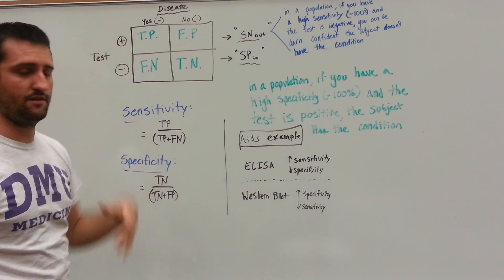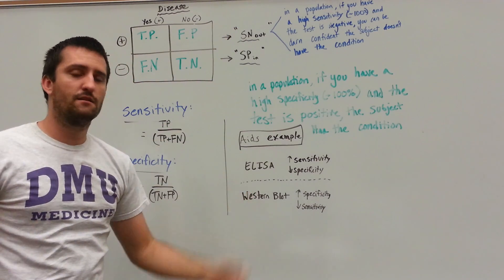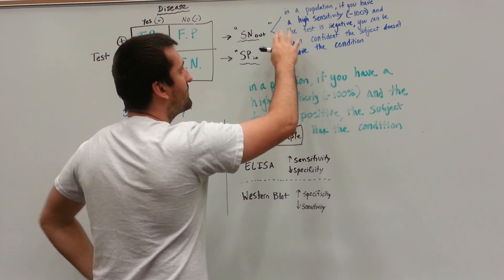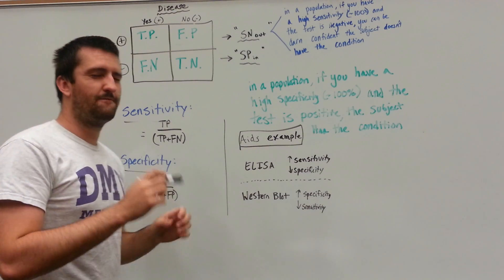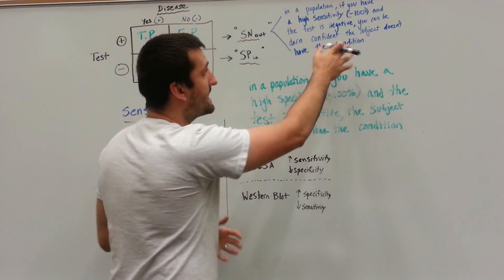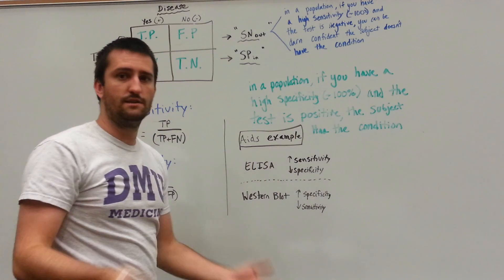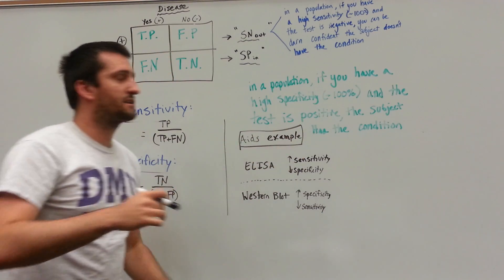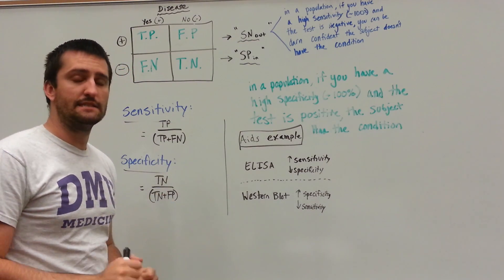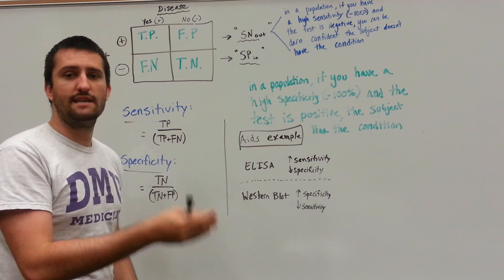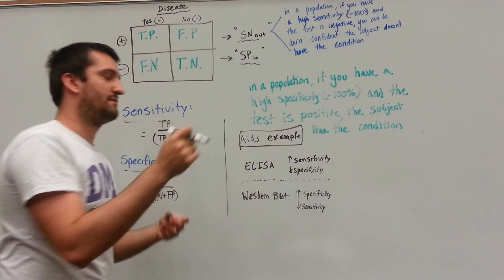Let's quickly talk about sensitivity because typically you're going to start screening a general population. So in a population, let's say in a medical school class, if you have a high sensitivity test that approaches 100%, so we're going to administer a test to them that's very, very sensitive. And the test is negative, so let's do a diabetes screening test for example, and that test is negative, so it says you don't have diabetes. You can be darn confident that the subjects do not have the condition. That's what sensitivity means. If a test is extremely sensitive and it says that the test is negative, then most likely it's negative. It's going to be able to rule out a condition.